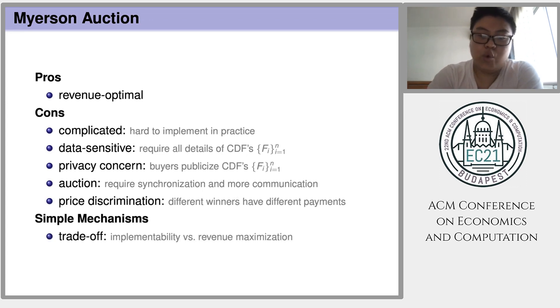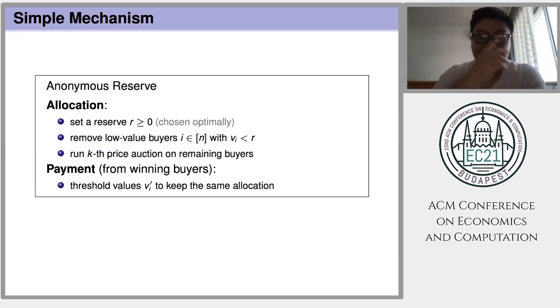So in order to implement auction or mechanisms in practice, we turn to some simple mechanisms as a trade-off between implementability and revenue maximization. In this work, we mainly consider three fundamental simple mechanisms. The first one is called anonymous reserve.